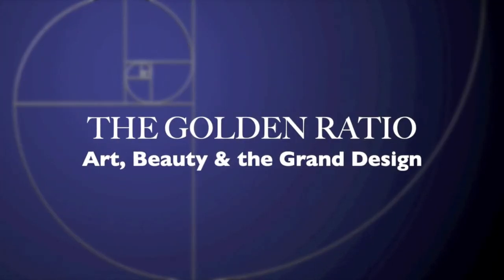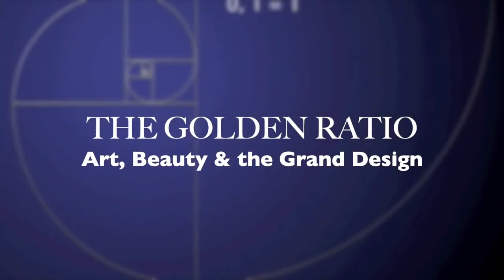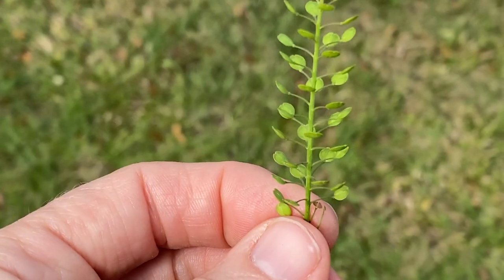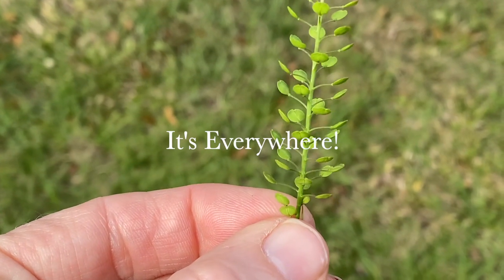The golden ratio, also known as the Fibonacci sequence. What is it and why does it seem to be everywhere in our world?